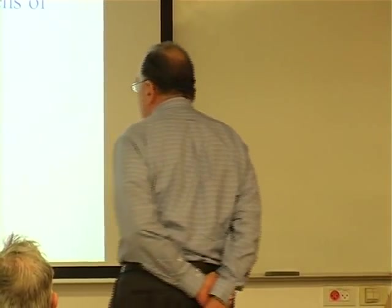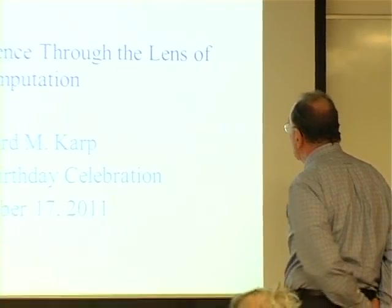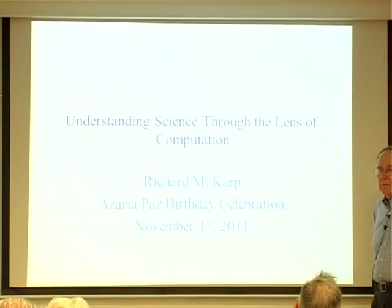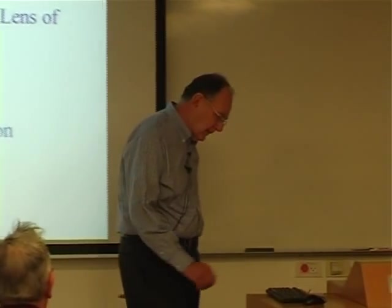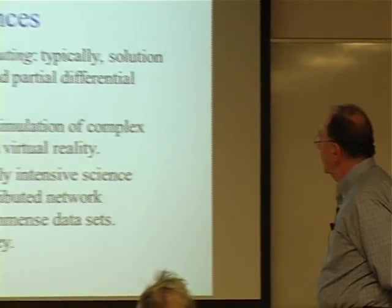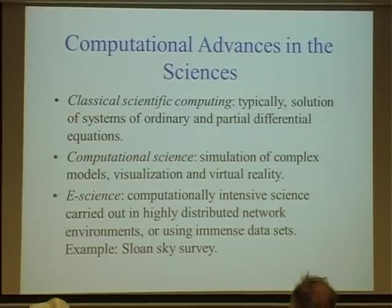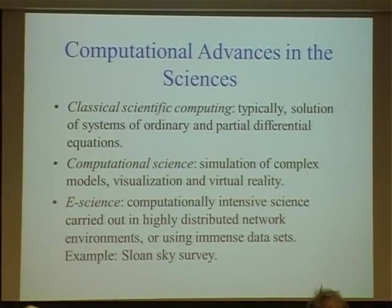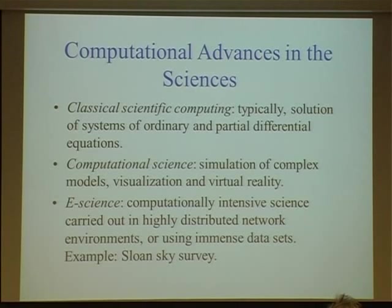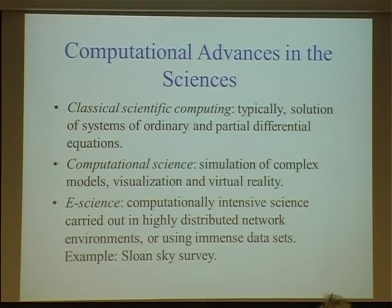I want to talk about how computer science can contribute to other fields — physical science, engineering, even economics and other social sciences. If we look at the history of how computation has served the sciences, we can see several phases. Initially, we have classical scientific computing where computing methods are developed to solve systems of equations formulated by natural scientists, often taking the form of ordinary and partial differential equations or systems of linear equations.